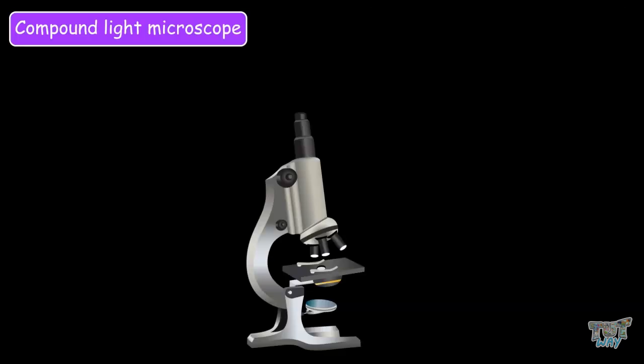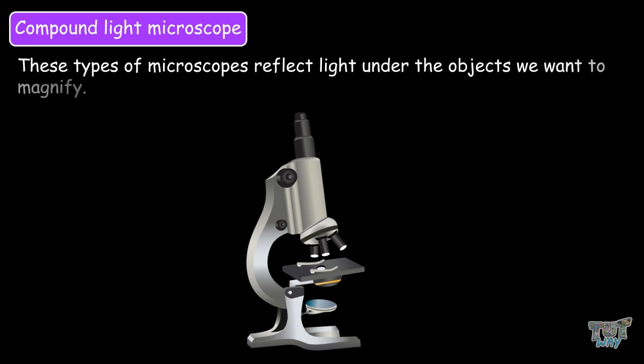The compound light microscope. This type of microscope reflects light under the objects we want to magnify. And this light is then passed through two lenses, which makes their image larger.